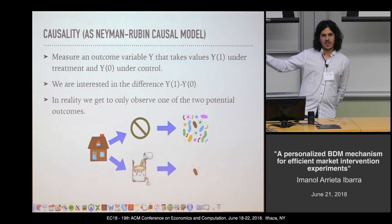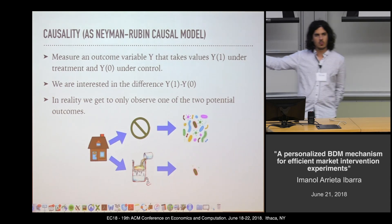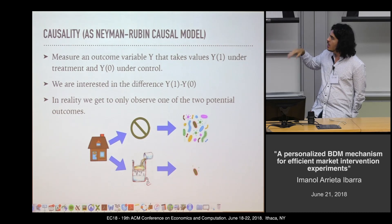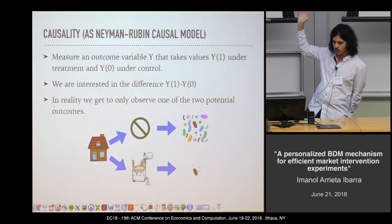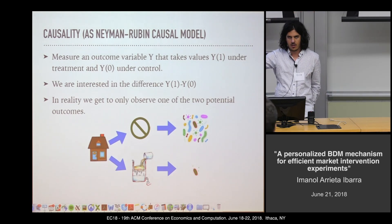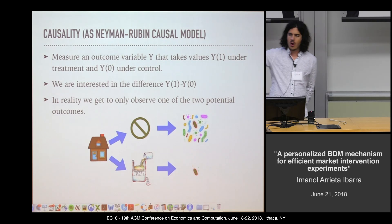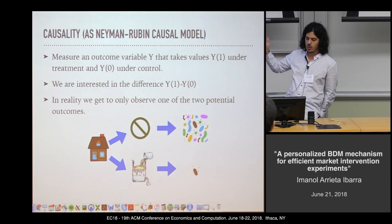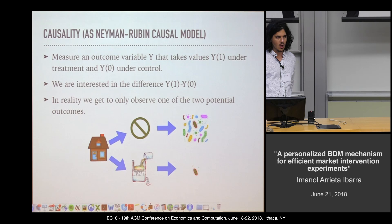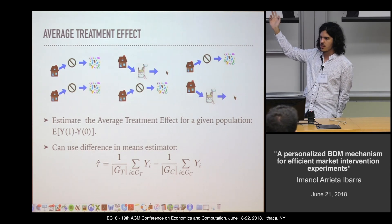Before I go on with why this mechanism can estimate demands and provide causal estimation, I'll give a refresher about what we mean by causality. We mean the Neyman-Rubin causal model, in which we assume that all units have two potential outcomes — one whenever they are assigned to treatment, one when they are assigned to control — and we're interested in the difference between these potential outcomes. The problem is that this difference cannot be observed; we can only observe one of these two quantities. So we then try to estimate the expectation of this difference.